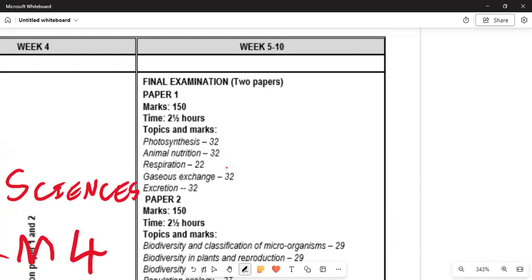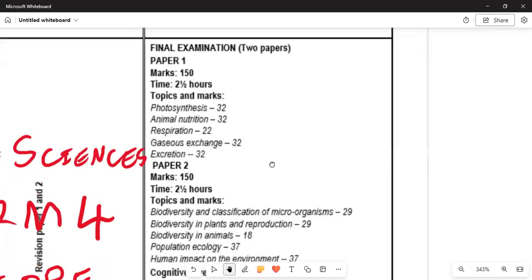Animal nutrition is also for 32 marks, respiration is for 22 marks, gas exchange is for 32 marks. And that would be the end of Paper 1.